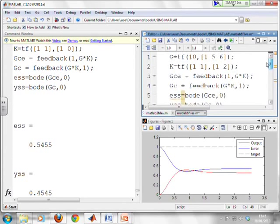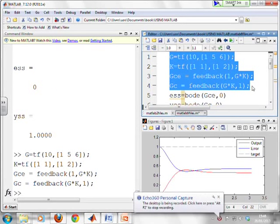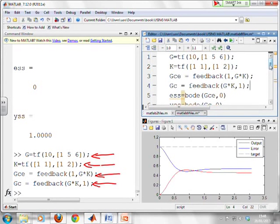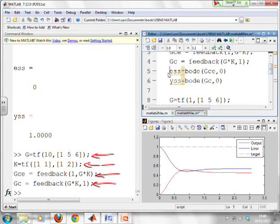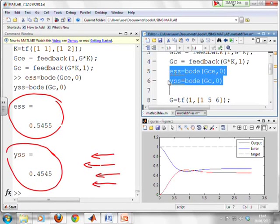We're going to enter a couple of transfer functions and do the closed-loop transfer function. We've entered a transfer function for G: 10 over s squared plus 5s plus 6. We've entered K as s plus 1 over s plus 2. We've calculated the closed-loop transfer function for the error using feedback(1, G*K), and for the output using feedback(G*K, 1). Now we can use these bode statements to get the offsets. E steady-state is 0.5455 and Y steady-state is 0.4545.